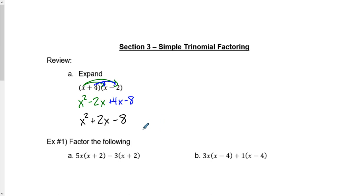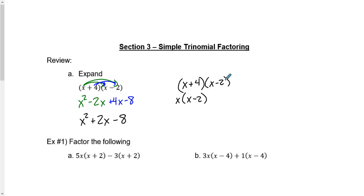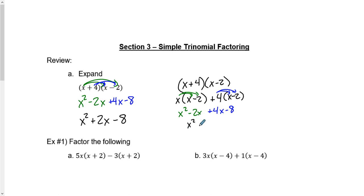So where does that lead us? Well, what some people sometimes do — and I absolutely like showing it when it's needed — is take this entire x and show their distribution step by step: x multiplied by the x subtract 2, and the 4 multiplied by the x subtract 2. The reason behind this is simply to help compartmentalize and to show every single step one thing at a time. It all still works out to give us the exact same result.